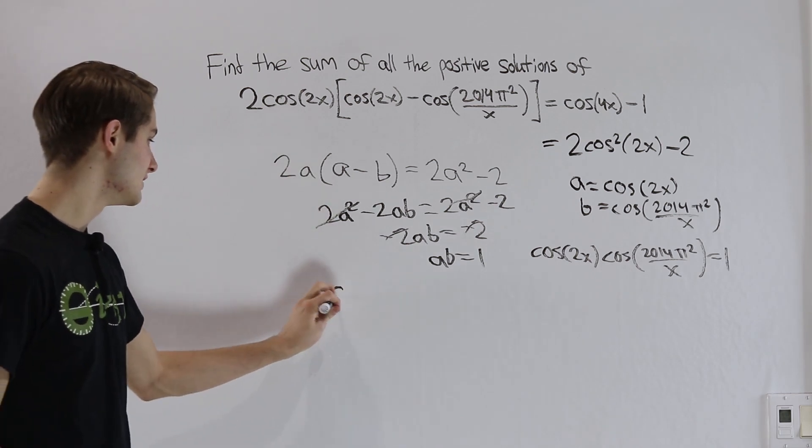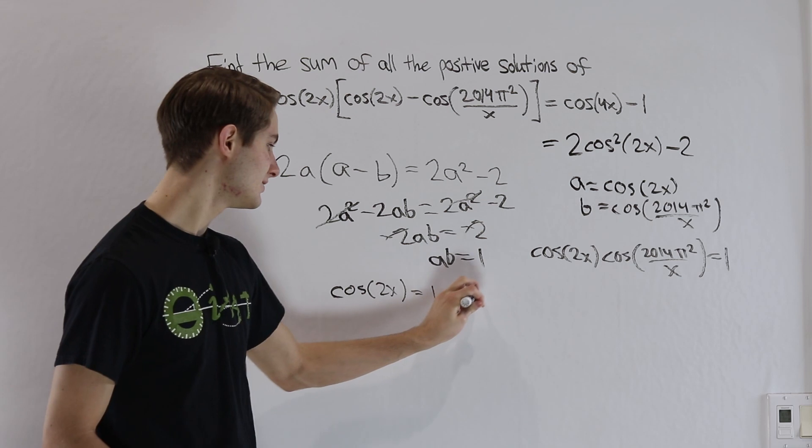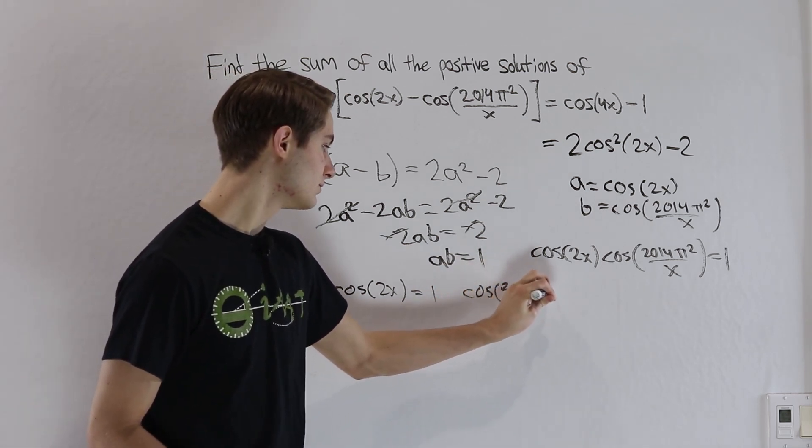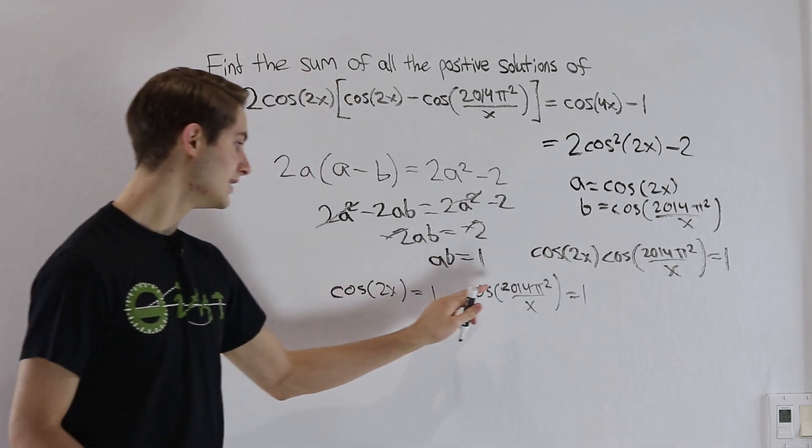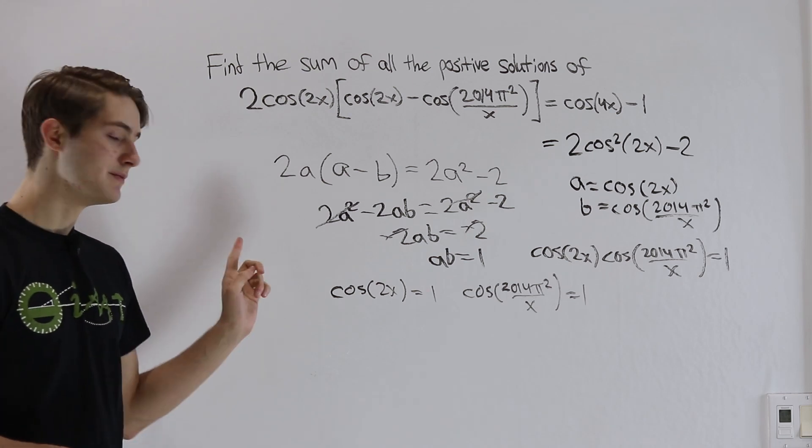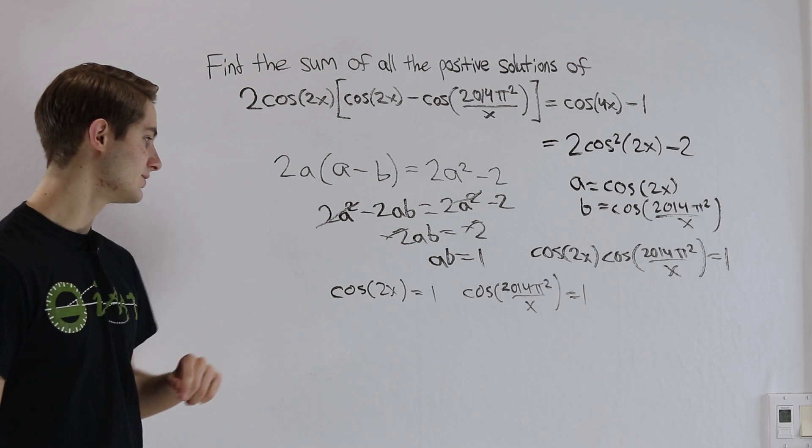So we have two options. Either cosine of 2x equals 1 and cosine of 2014π squared over x equals 1. Or we'll look at this second, they're both equal to negative 1. That way when we multiply them together, we'll get the result that we need. Let's take a look at this to start out.